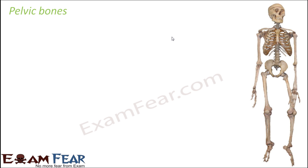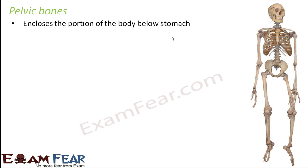The last type of bone that we will discuss is the pelvic bones — these are the bones present in the pelvis region. Pelvis is that portion of the body which lies below the stomach. You can see that this is the region which lies between the abdomen and the thighs. Here these are your thighs and this is your abdomen, so just between the abdomen and thighs you have the pelvis.